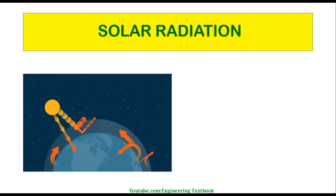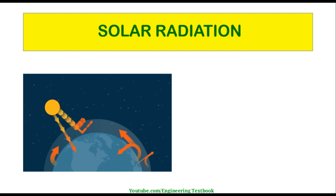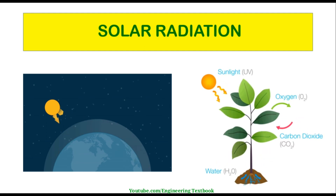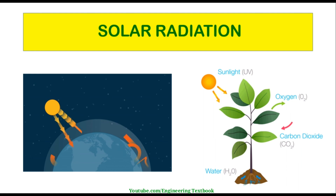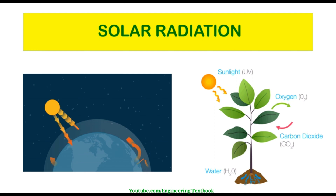Solar radiation is the energy emitted by the sun through electromagnetic waves, and life on the earth depends upon it. In addition to determining atmospheric and climatographic dynamics and trends, it makes plant photosynthesis possible among other processes. Moreover, it currently allows us to produce photovoltaic energy, which is essential in the fight against climate change.